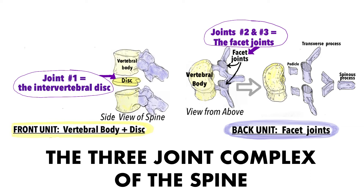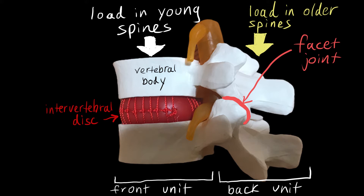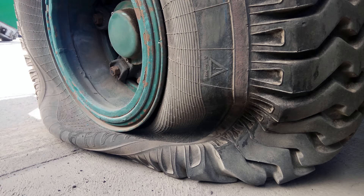Wear and tear changes of the spine typically occur first in the vertebral end plates above and below the intervertebral disc. Over time, the jelly-like core of the disc dries out and loses its ability to bear weight. With continued load on the spine, the intervertebral disc flattens out and cannot effectively distribute this pressure across the vertebral bodies. Think of a flat tire which can no longer hold air.